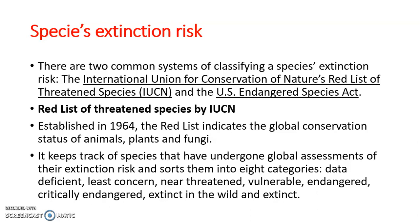Species named in the Red List are put under eight categories: data deficient, least concerned, near threatened, vulnerable, endangered, critically endangered, extinct in the wild, and extinct. These are the eight categories in which species are categorized in the Red List. The Red List of Threatened Species keeps changing periodically — if a species is threatened now, maybe next year it is no longer threatened, or maybe it has become endangered.